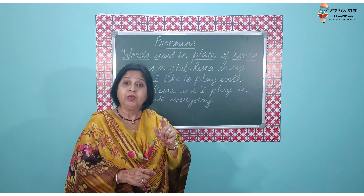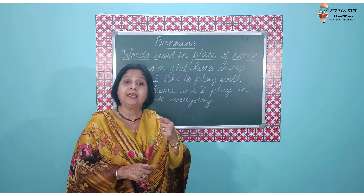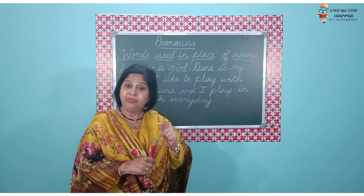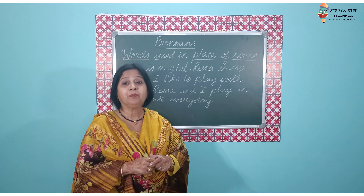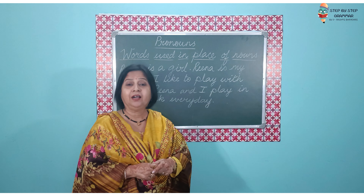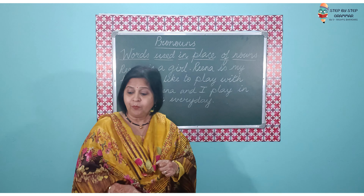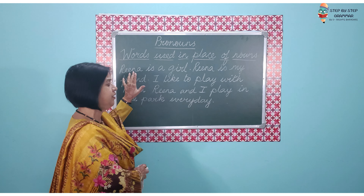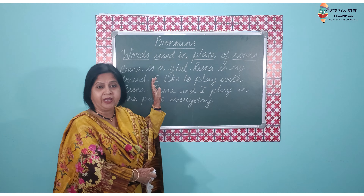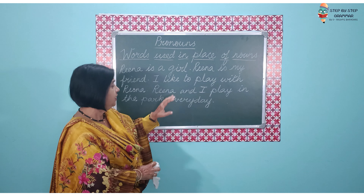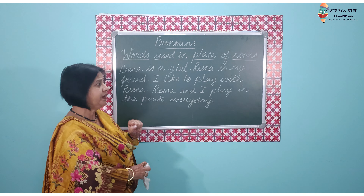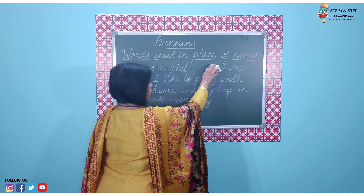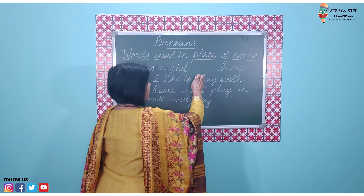So what do we do? We can use another word in place of Rina, and that word which we use in place of Rina is called a pronoun. For example, the first time when I introduce my sentence, it is fine — Rina is a girl. Now the second time when I'm saying Rina is my friend, I can use the word 'she' over here.